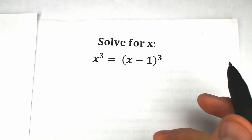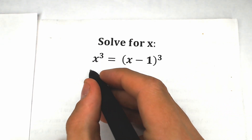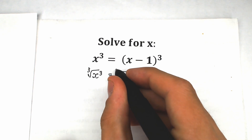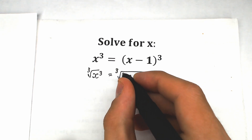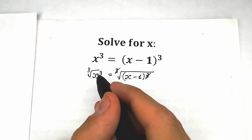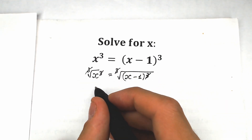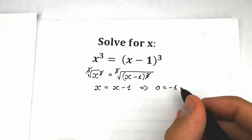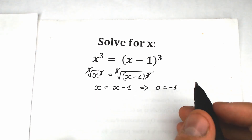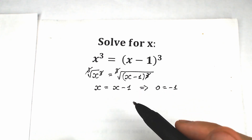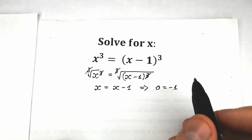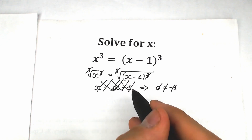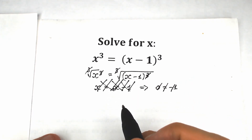A lot of students might say, 'Hey, this is the easiest challenge I've ever seen — we can easily take the cube root on both sides.' So we apply the cube root on the left side and the right side, cancel the cube and the three, and as a result we get x equals x minus one. From here, we get zero equals minus one. A lot of students don't know about the correct approach, and this is the most common mistake.